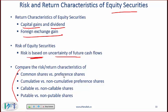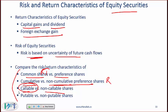You need to compare the risk-return characteristics of different share types. Common shares have higher risk, and with higher risk we expect higher return. For cumulative versus non-cumulative preference shares, non-cumulative has higher risk because dividends from the past are not collected. For callable versus non-callable, callable has higher risk because the company can call back the shares. For putable versus non-putable, non-putable has higher risk.